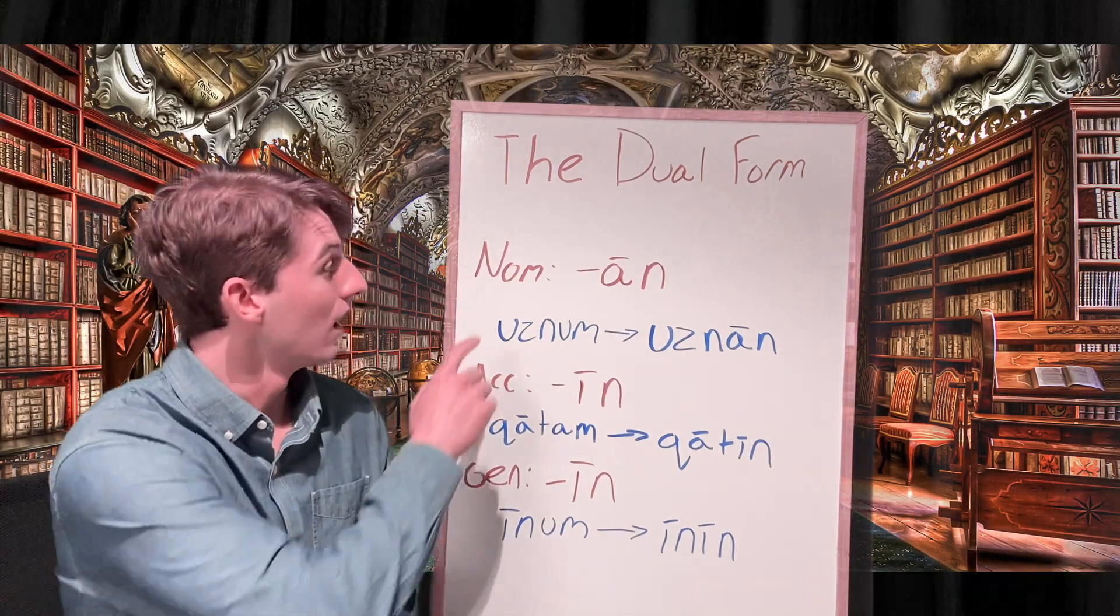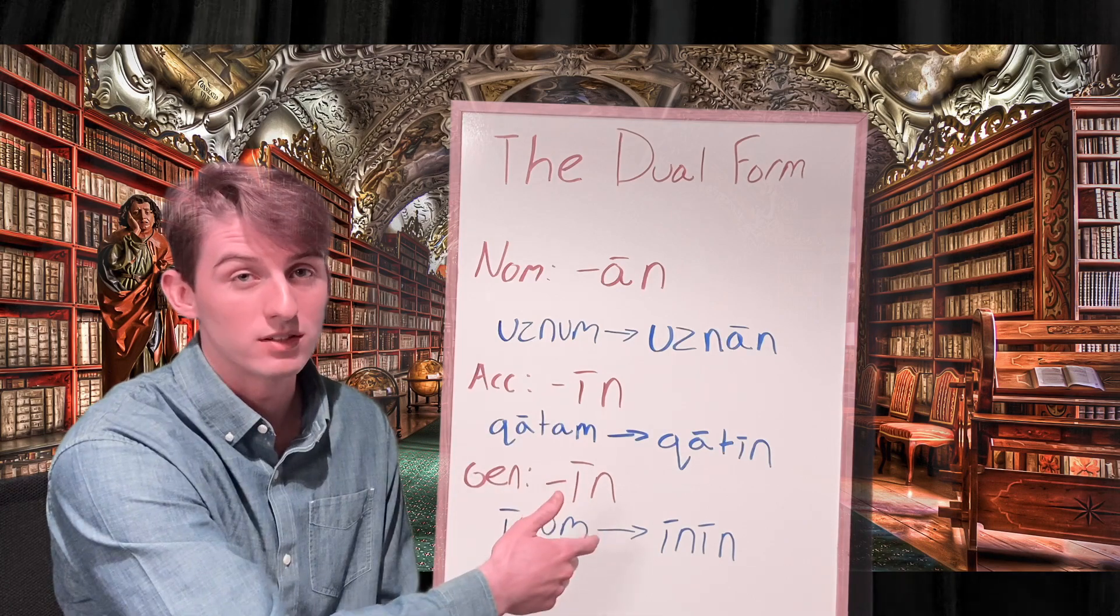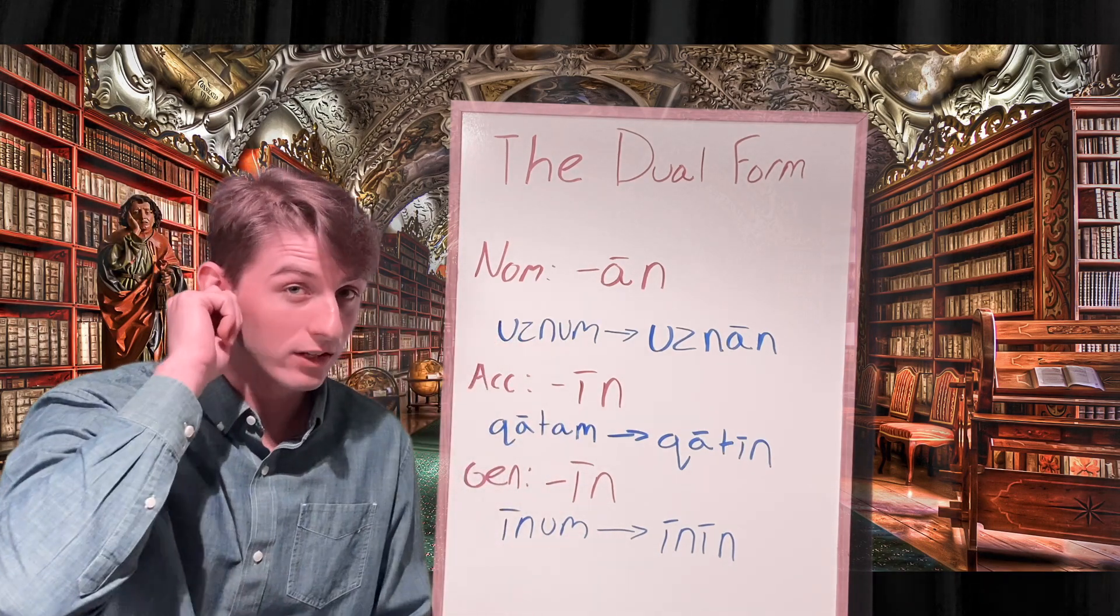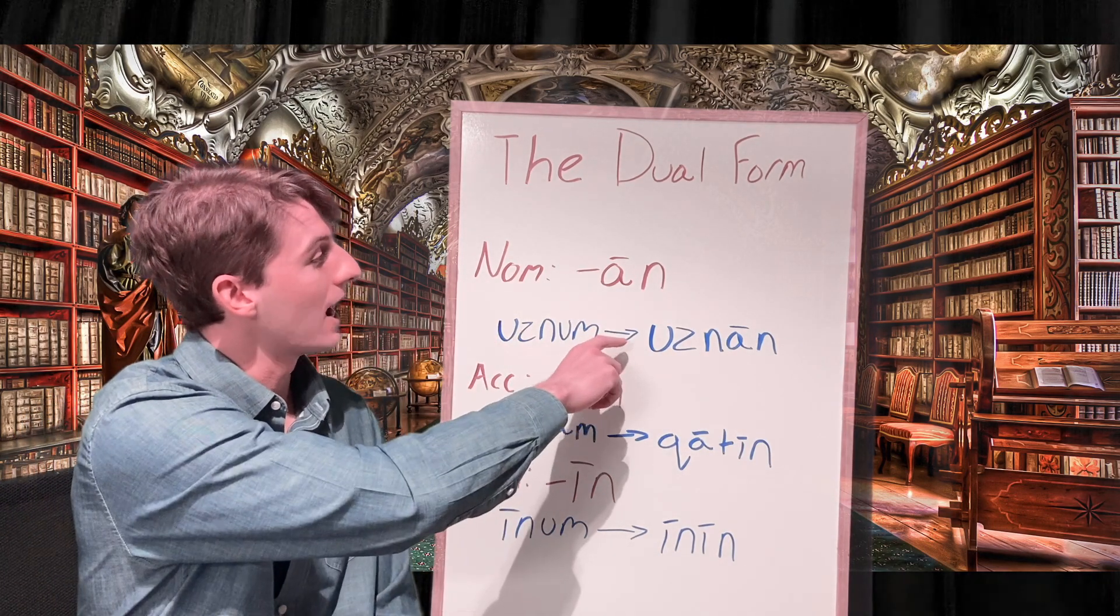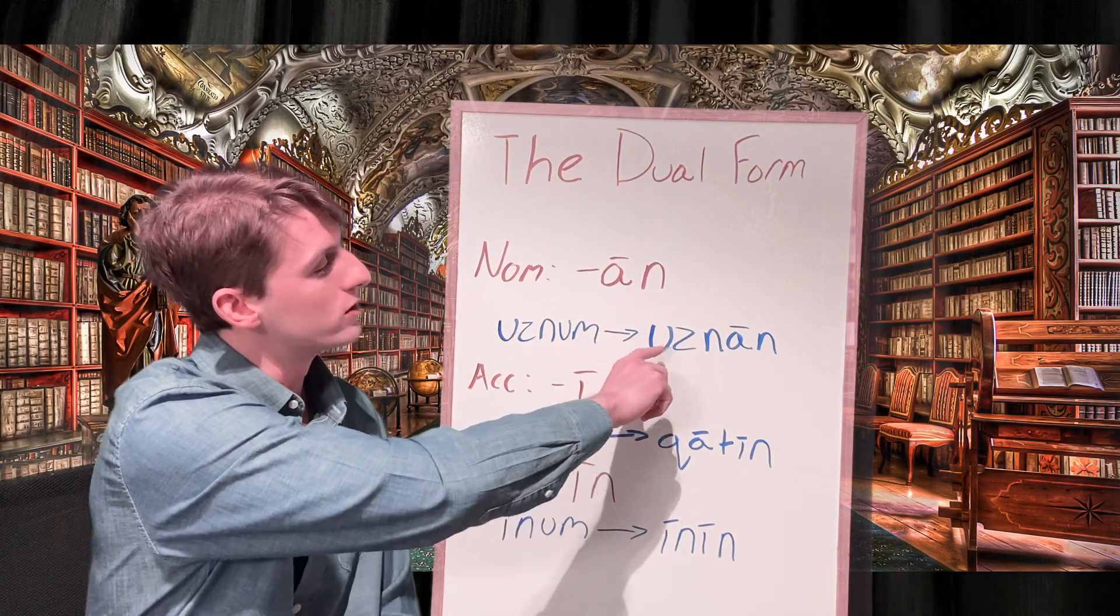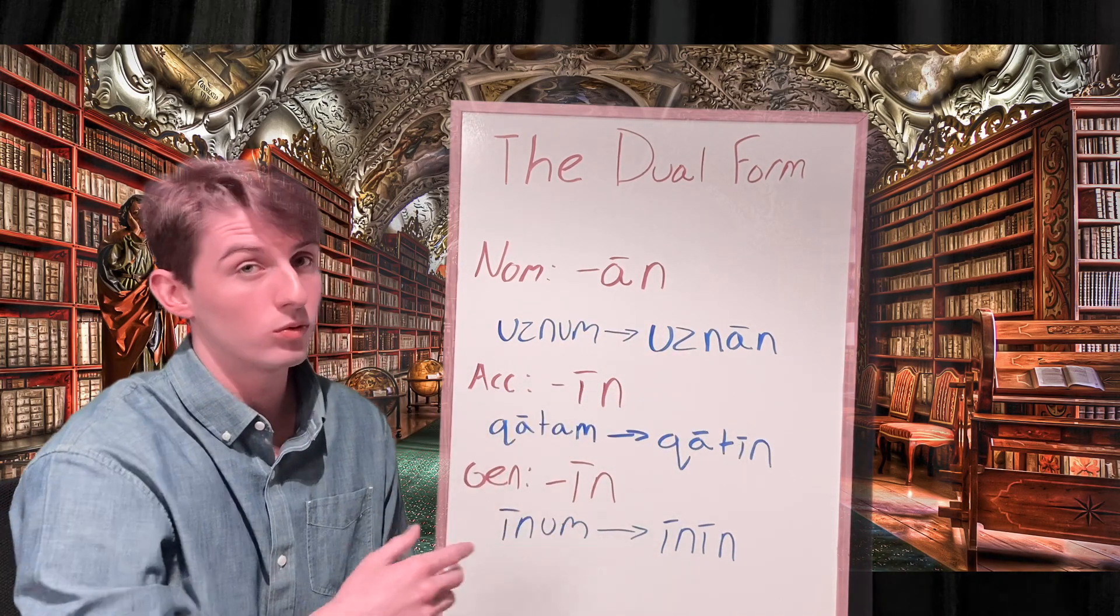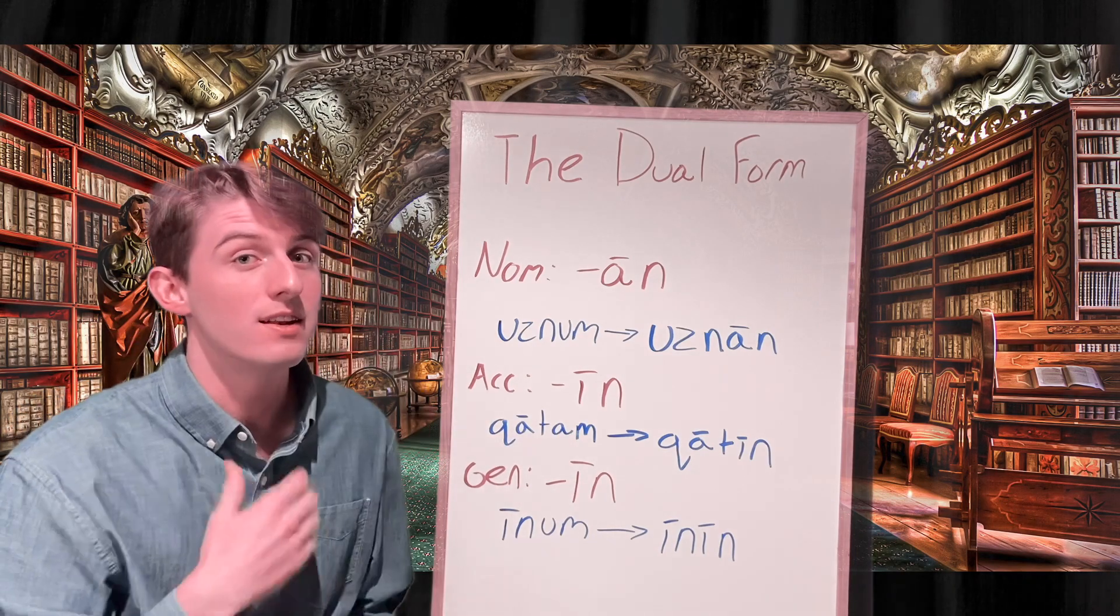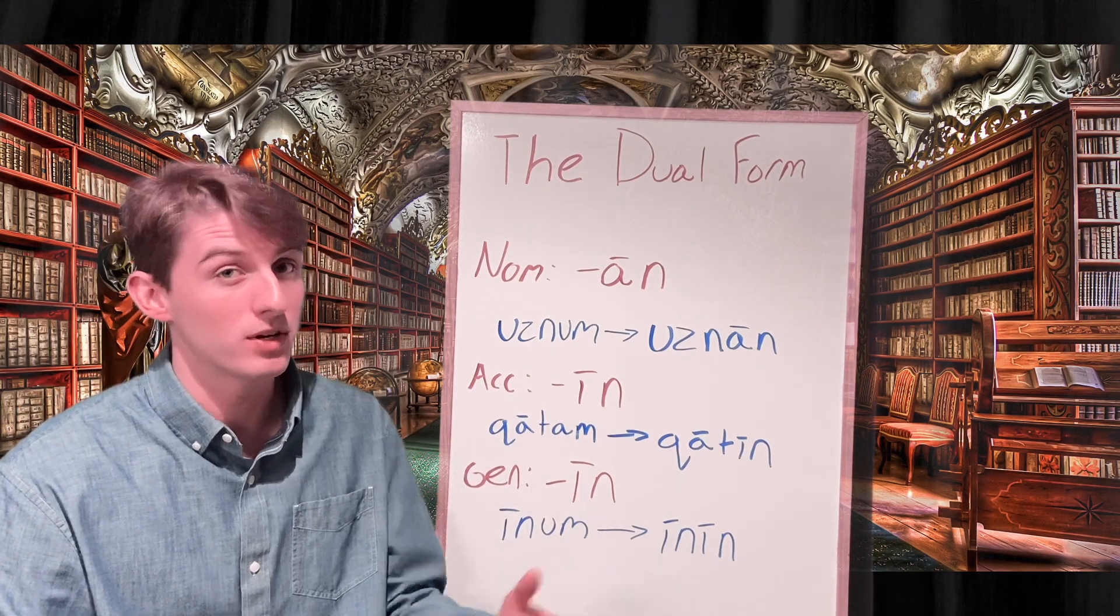Here I have an example of each case ending added to different words. This is uznum in the singular, meaning one ear. And then if we were to add the AN ending, it would be uznan, dual, which means two ears in the nominative case. That means it's going to be the subject of our sentence.